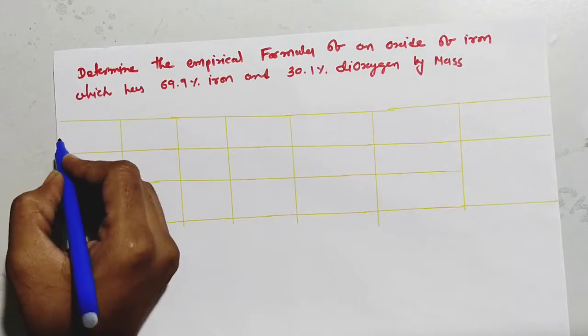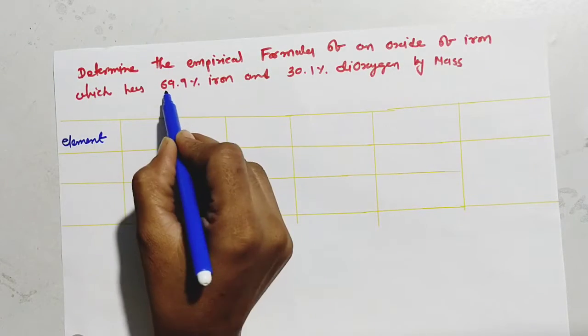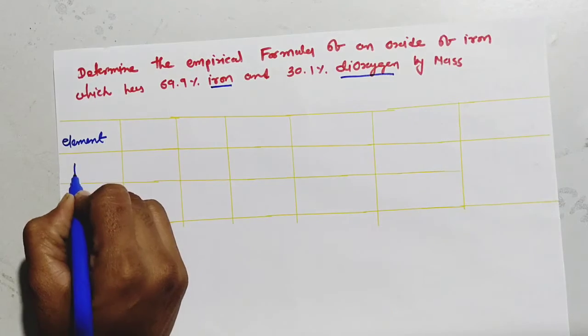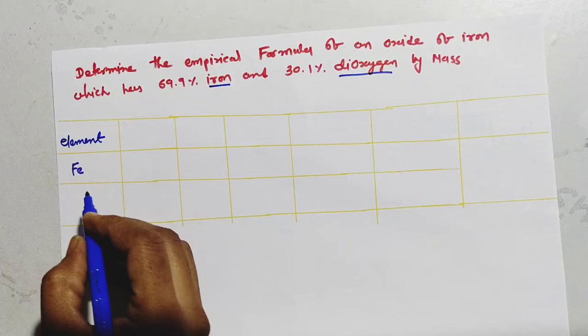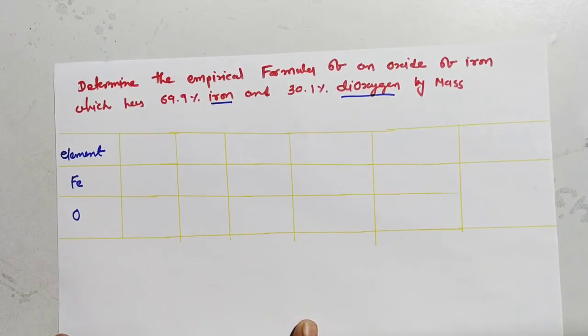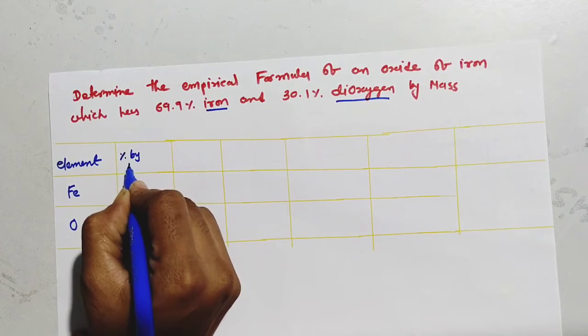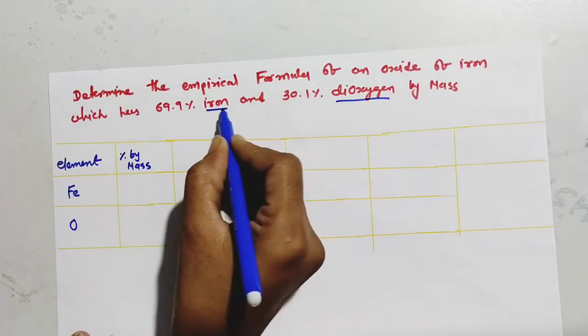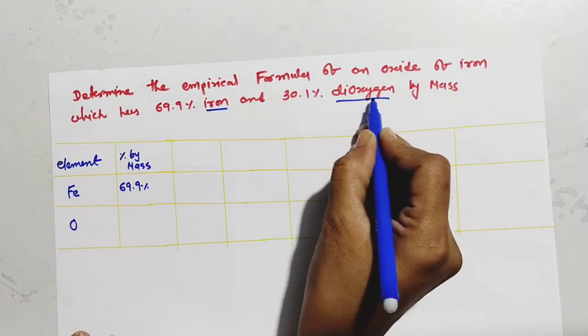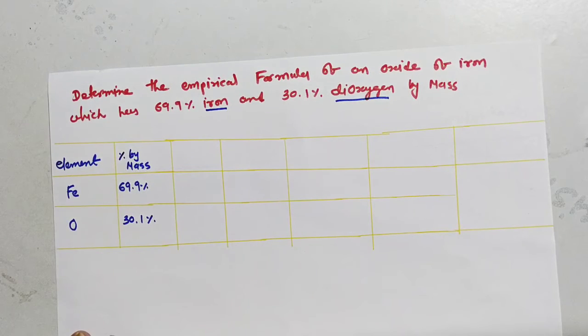Now first of all we have to write an element's name. Which element is given? Iron and dioxygen. Iron, its symbol is Fe and dioxygen is O. And which amount of percentage by mass? Iron is 69.9% and dioxygen, it is 30.1%.